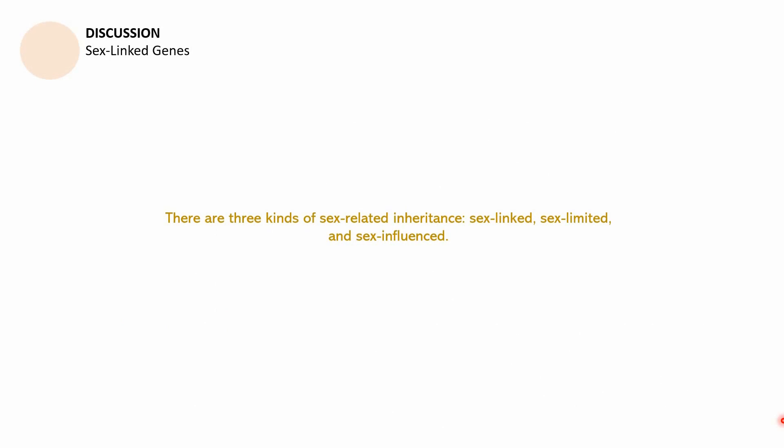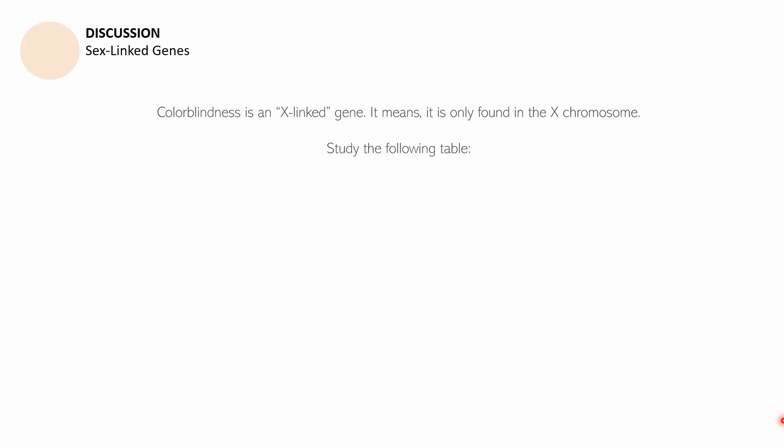Let us now proceed to the next part: sex-linked genes. There are three kinds of sex-related inheritance — sex linked, sex limited, and sex influenced. For this discussion we are talking about sex-linked genes, which are characteristics that are transferred from the parent to the offspring through one of the two sex chromosomes. The gene may be on the X or on the Y chromosome.